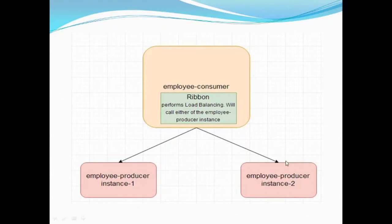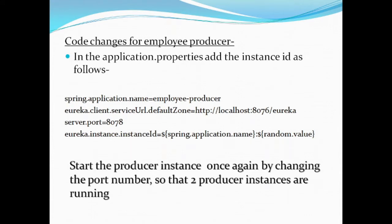The producer instances must be created as more than one depending on the load, and each producer instance is assigned a randomly generated ID so the client can connect to one of the available producer services. On the producer application side, we configure the instance name, discovery server URL, and port number. We also add a new property in the application.properties or application.yml file called eureka.instance.instanceId, set to the Spring application name combined with a random value, which auto-generates a random instance ID for every microservice.